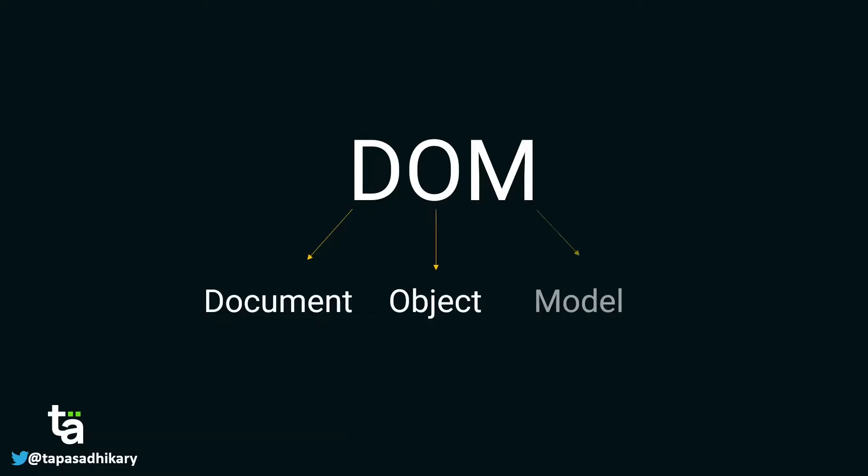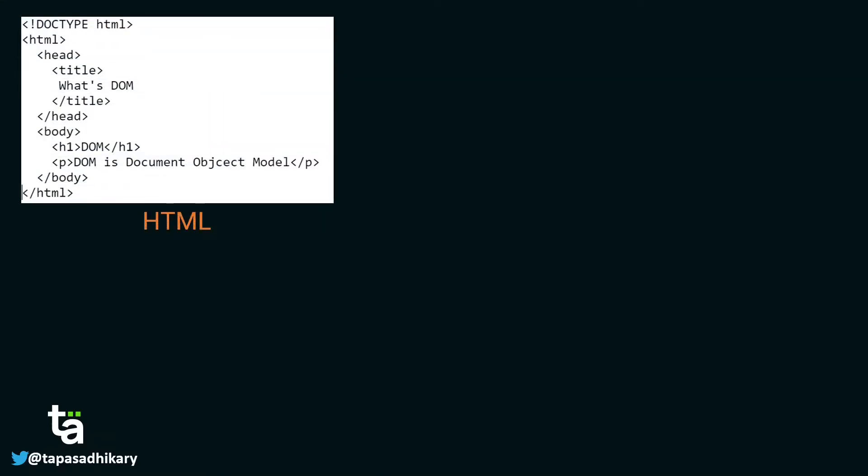DOM is an abbreviation for Document Object Model. HTML is the markup language for the web — it gives structure to your web page or web application that you see in the browser. You define different tags, each with a different meaning, and with those tags you define the entire structure of the web page. But under the hood, those tags have a different kind of representation.